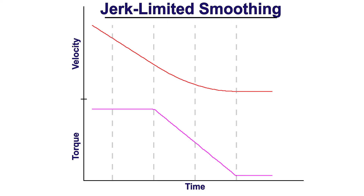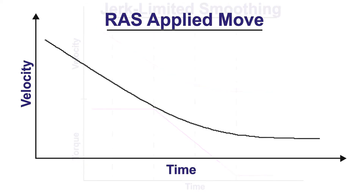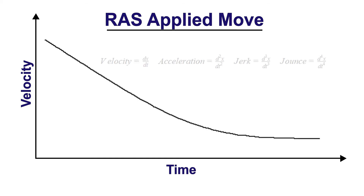That's where the RAS comes into play. A jerk-limited and jerk-derivative-limited profile - where the jerk-limited profile controls the rate of change of acceleration, the RAS controls the rate of change of the rate of change of the acceleration. You're taking it one derivative further, which as you'll see creates an extremely smooth motion profile. I think you'll be pretty shocked to see what the torque actually looks like when the RAS is applied.